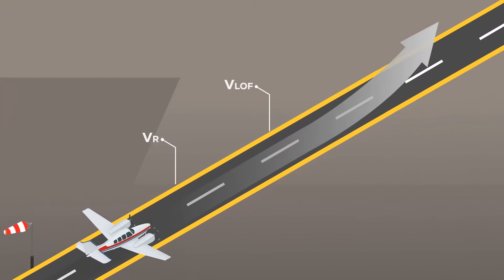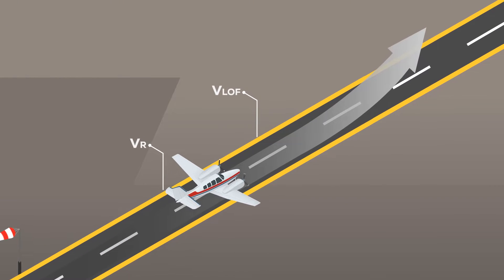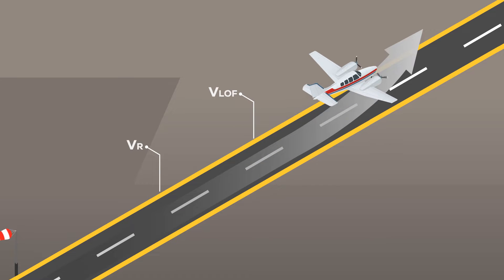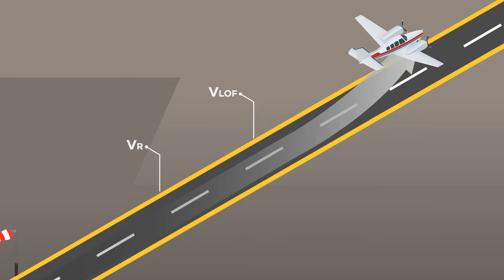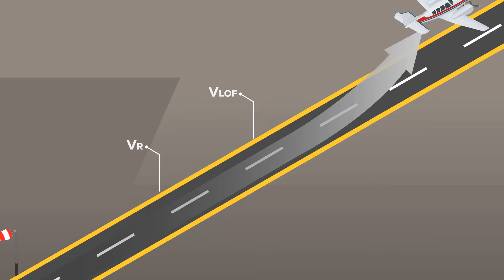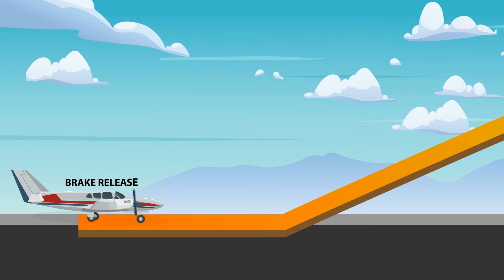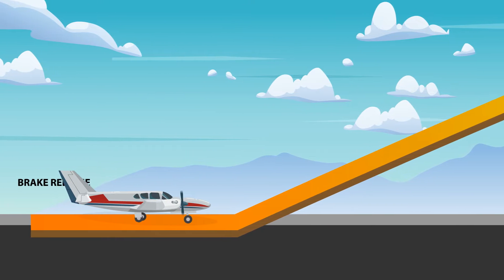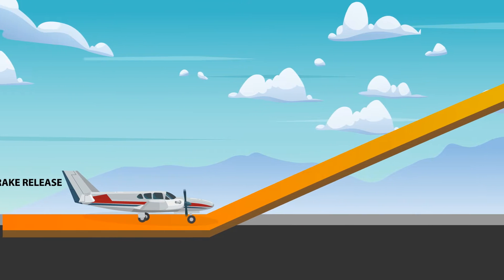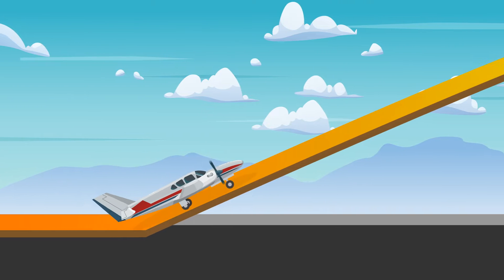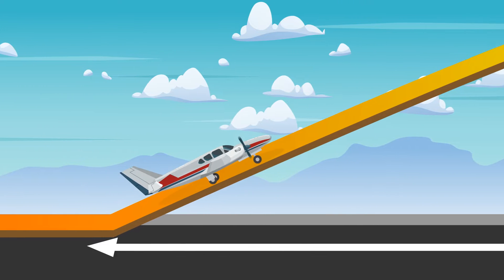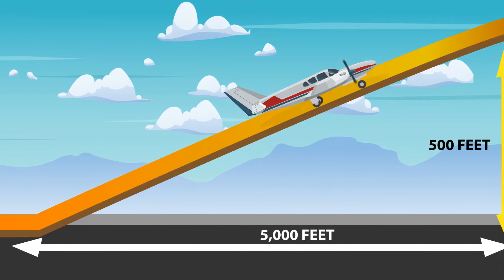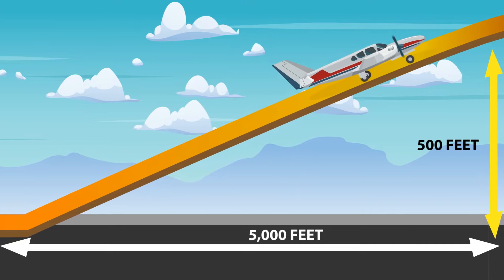The specified speed may either be VR or VLOF, which are V speeds for rotate and liftoff speed respectively, depending on the aircraft manufacturer. Another performance figure to understand is the climb gradient. The climb gradient is a slope frequently expressed in terms of altitude gain per 100 feet of horizontal distance, and is stated as a percentage.